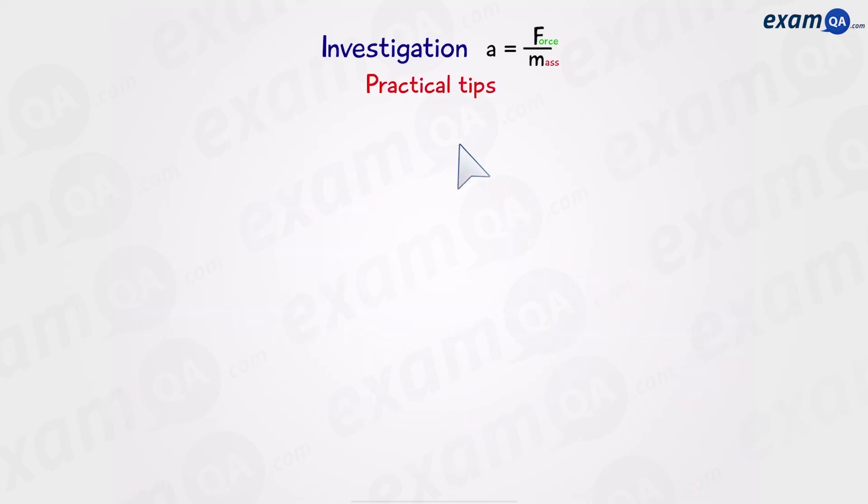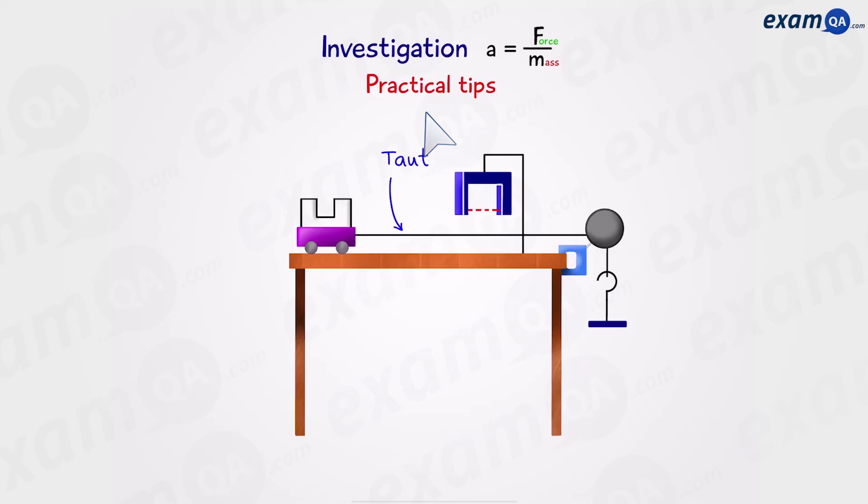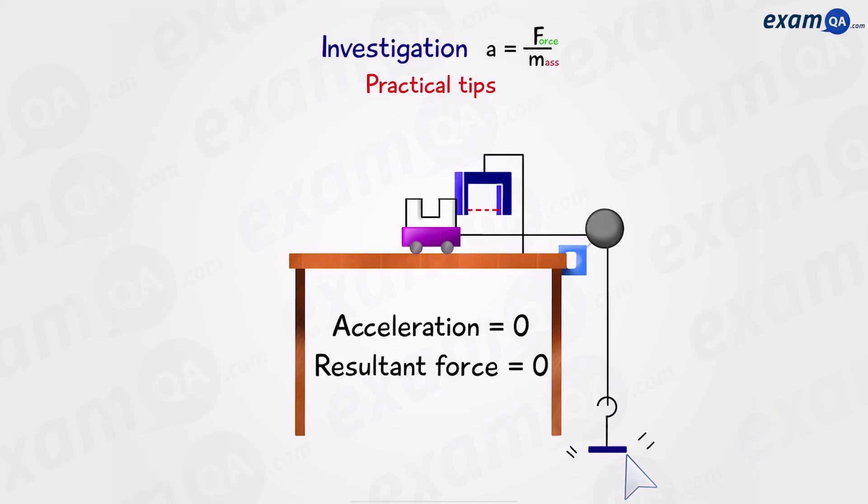Some practical tips. An important thing is that you want the string to be taut. In other words, it shouldn't be loose. If it's loose, the hanging masses will fall and hit the ground too early. This means the acceleration or the resultant force on the trolley will become zero. So how do we get around this problem? Number one, use a shorter string, or use a taller table, or you could just move the light gate a bit forward, closer towards the trolley.